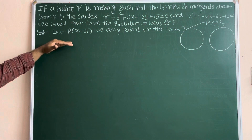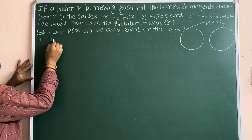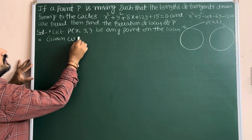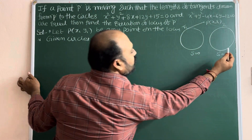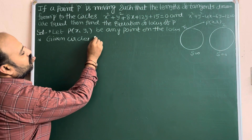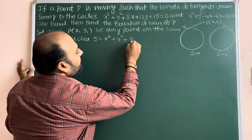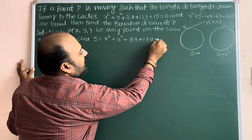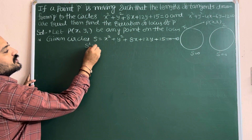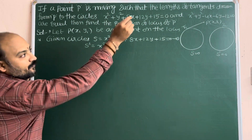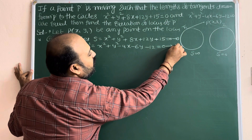Next, we identify the given circles. Let the first circle be S = 0 and the second be S' = 0. So S = x² + y² + 8x + 12y + 15 = 0, which is equation number 1. And S' = x² + y² - 4x - 6y - 12 = 0, which is equation number 2.